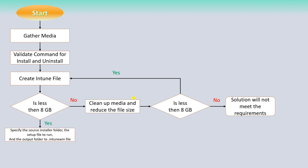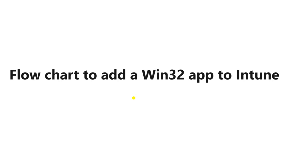If the file size is less than 8 GB, then specify the source installer folder and the setup file to run, and add the output folder to the Intune file. This is the complete flow for how you can create your .intunewin file. Next, let's see the flowchart to add a Win32 app to Intune.